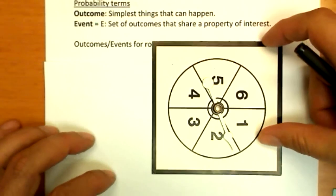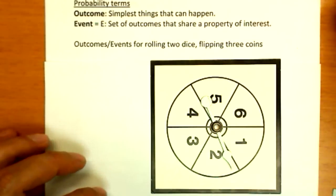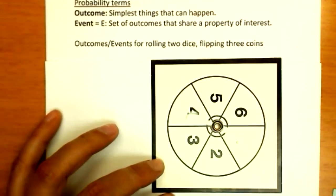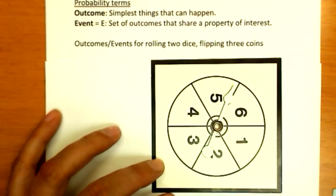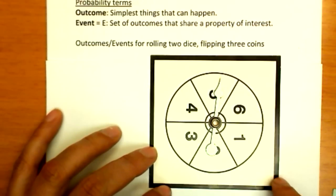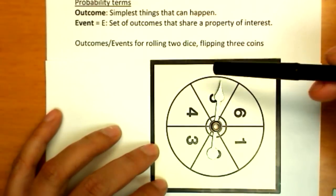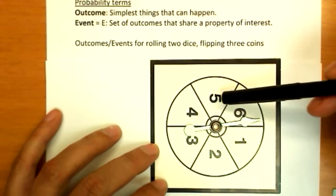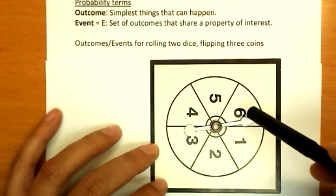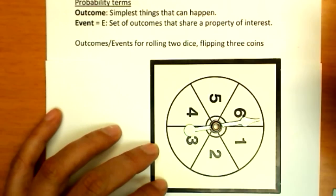Now an event is a little bit more complex than that. It's a set of outcomes that share a property of interest. Let's say I'm interested in getting a number 5 or greater. Okay, well there are two outcomes that would meet that event, and I got one right there. 5. Try the other direction. I'm just lucky at rolling doubles today. Good thing I'm on my way to Vegas next week. Anyhow, the event, a number greater than 5, would be 5 or 6. You could have other events like even numbers, in which case it would be 2, 4, and 6. And if the outcomes are equally likely, it becomes very easy to calculate probabilities of events.